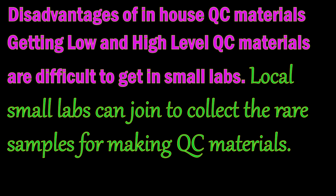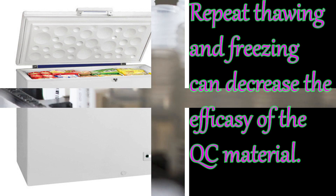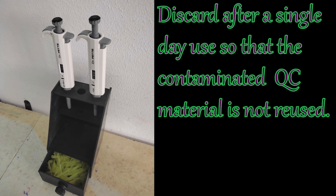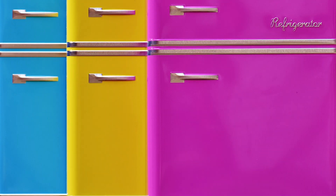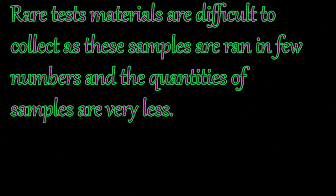Disadvantages of in-house internal quality control materials: low-level and high-level pooled serum are difficult to prepare. Many small-town labs may not have minus 20 degree centigrade freezers, and the cold chain must be maintained. Each day, a new frozen aliquot should be used; leftover material should be discarded after six to eight hours at room temperature, or stored at four to six degrees centigrade for up to 24 hours. In-house QC materials cannot be prepared for all analytes, since enzyme activity and rare analyte samples are very difficult to obtain.